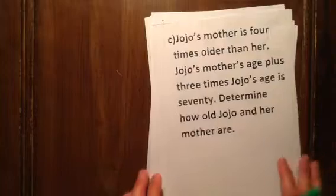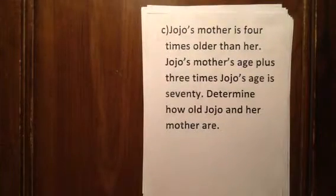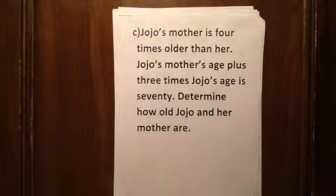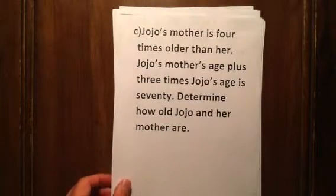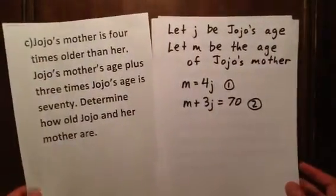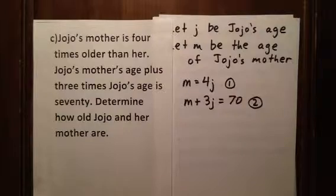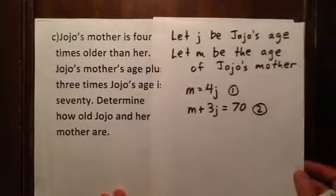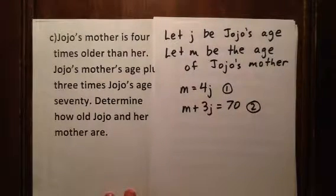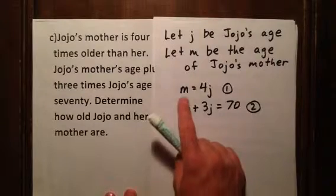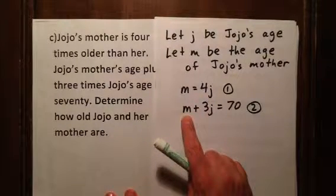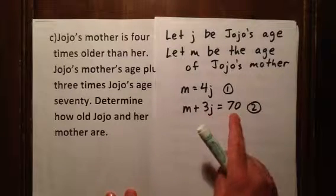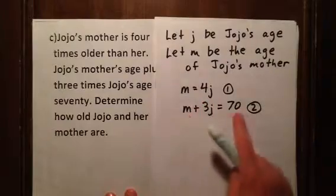Jojo's mother is four times older than Jojo, and Jojo's mother's age plus three times Jojo's age equals 70. We want to find both ages. We let j be Jojo's age and m be Jojo's mother's age. The first relationship gives m equals 4j. The second gives m plus 3j equals 70. We have two different equations, so we have a system of equations.